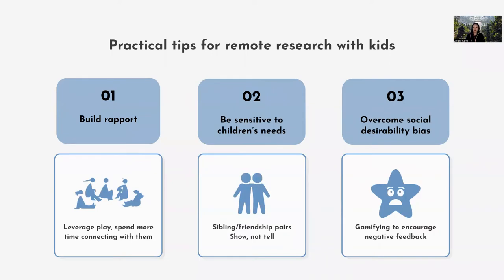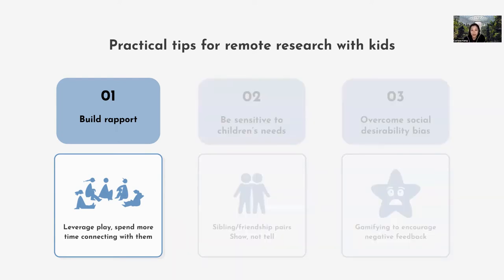Now let's jump into the three practical tips for running remote research with kids. The first is about the best ways to build rapport with kids, which is really important. The second is how to be sensitive to children's needs — a lot of things may come up during research with kids, so the researcher needs to be flexible, sensitive, and let the kid know they can stop the session at any time. The third is how to help kids overcome social desirability bias, since kids might feel they need to answer a certain way to please the adult.